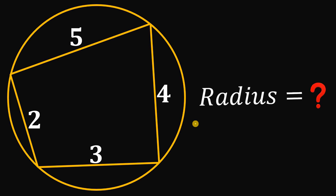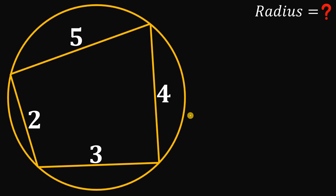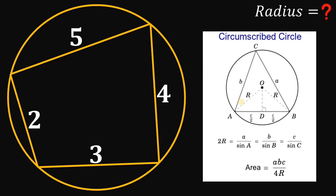Now let's see if you got the correct answer. To find the radius of this circle we will use three geometric concepts. The first one states that the area of a triangle inscribed in a circle equals the product of its sides A, B, C divided by 4 times the radius R. Since we want the radius, this formula is very useful. But we have a quadrilateral, not a triangle, so we need to address that.